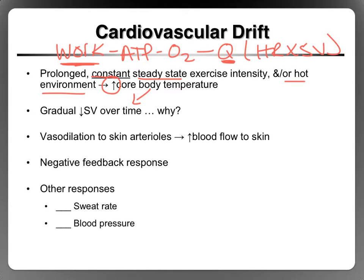As the body heats up, one of the ways the body cools itself is it sends more blood flow to the skin where we can dissipate heat into the environment. This occurs because we get more vasodilation to the arterioles in the skin — an increase in radius — resulting in more blood flow to the skin.